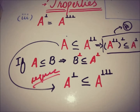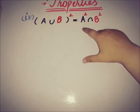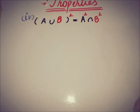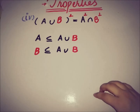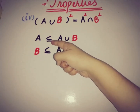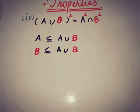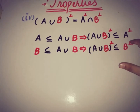The next property is that (A ∪ B) annihilator equals A annihilator intersection B annihilator. We prove this equality for A and B as subsets of the Hilbert space. We know that A is a subset of A ∪ B and B is a subset of A ∪ B, so applying the second property and taking annihilators on both sides flips the relation: (A ∪ B) annihilator ⊆ A annihilator.